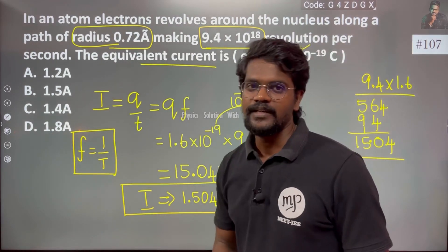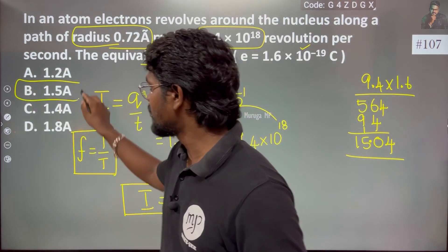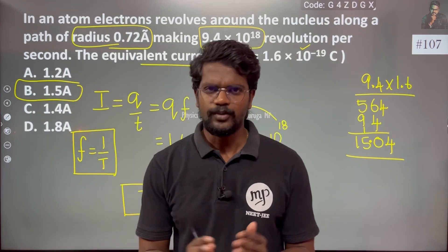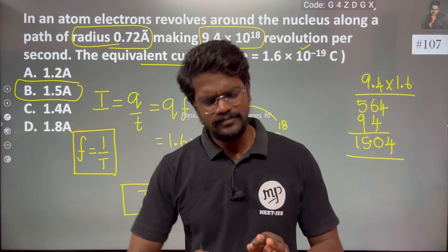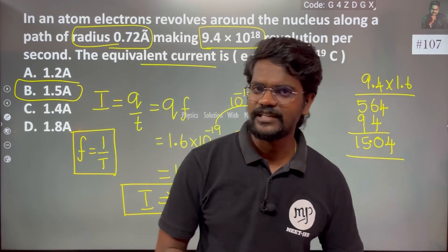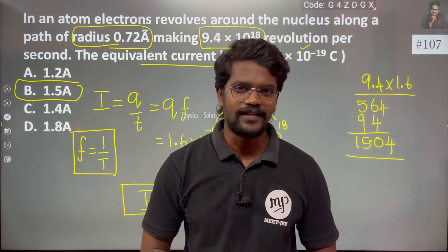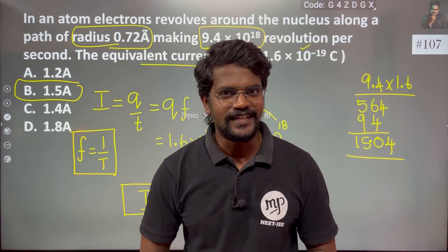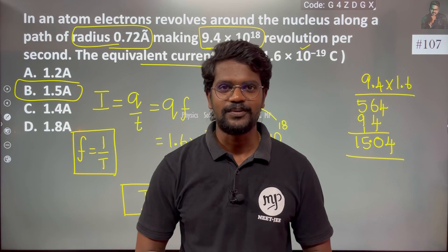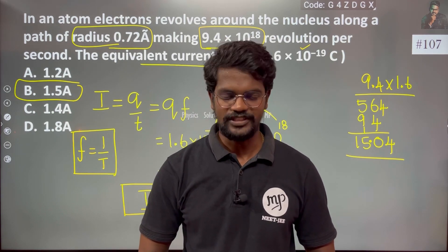The current value is clearly 1.5 A. Option B is the correct answer. This was a simple step — we will now increase the difficulty level. If you have any doubts, please comment. Thank you, happy to help.